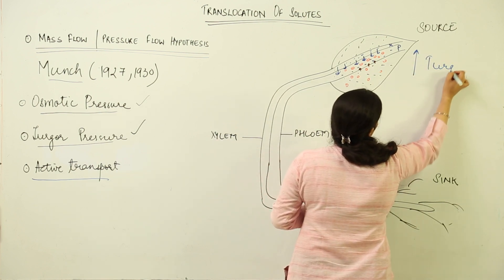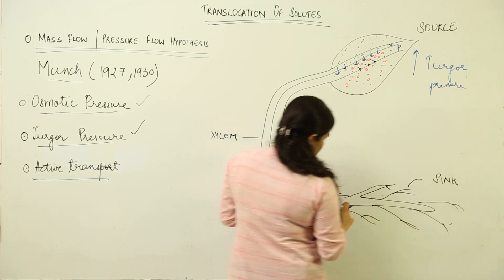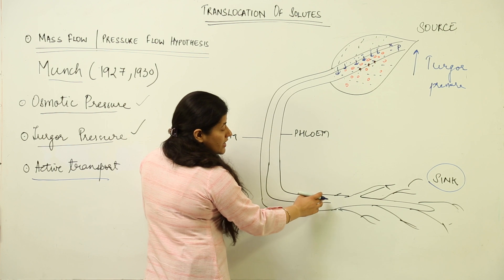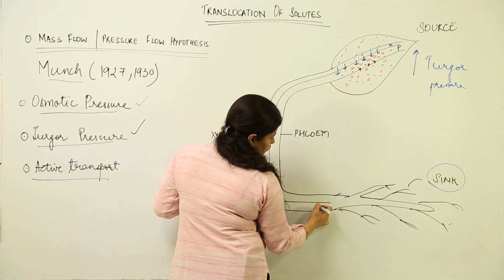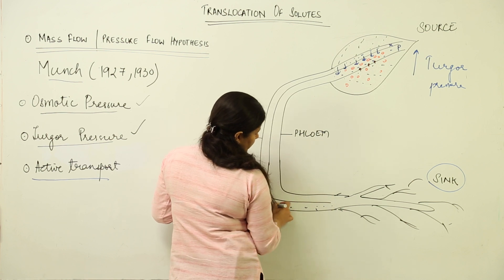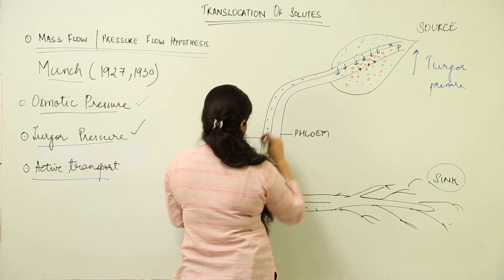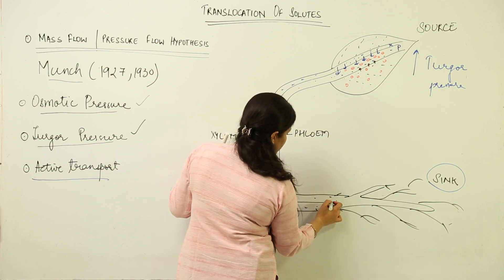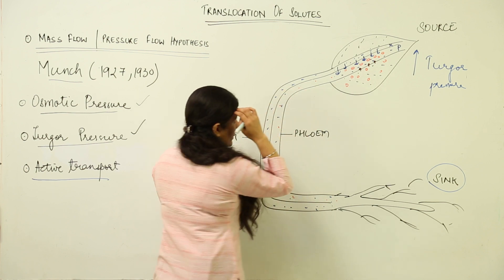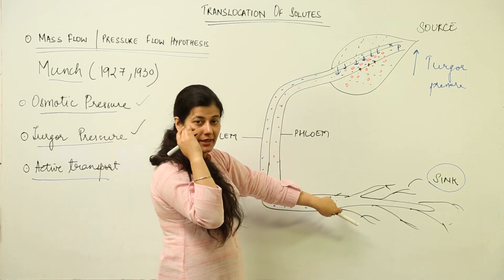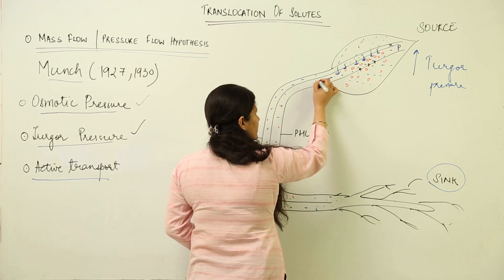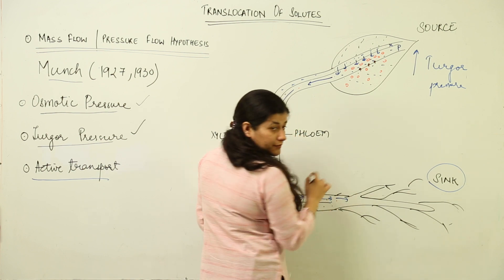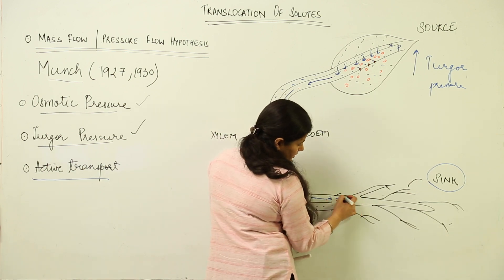This turgor pressure at the source is greater compared to the turgor pressure at the sink — we are taking root cells as the sink here. The root is acting as a sink, and comparatively there is lesser turgor at the sink side. Because turgor is higher at the source than at the sink, there is a turgor pressure gradient, and the sap rushes — there is a mass flow of sap towards the sink.